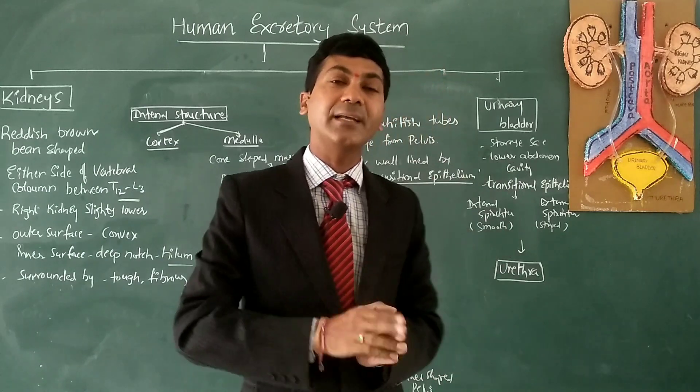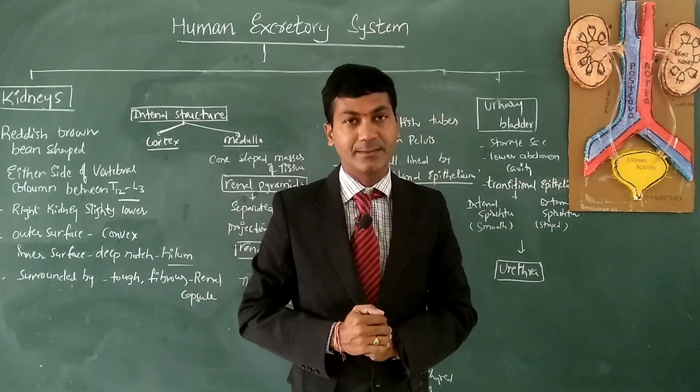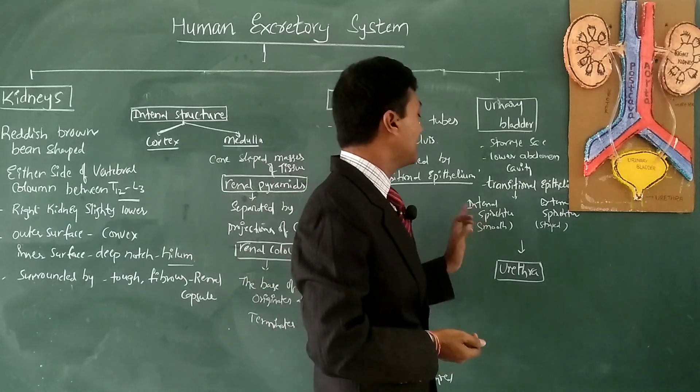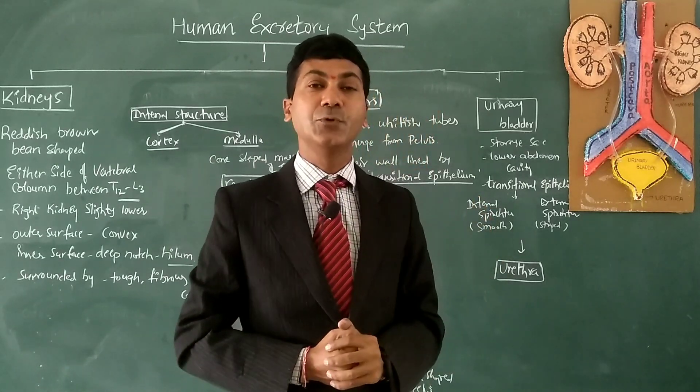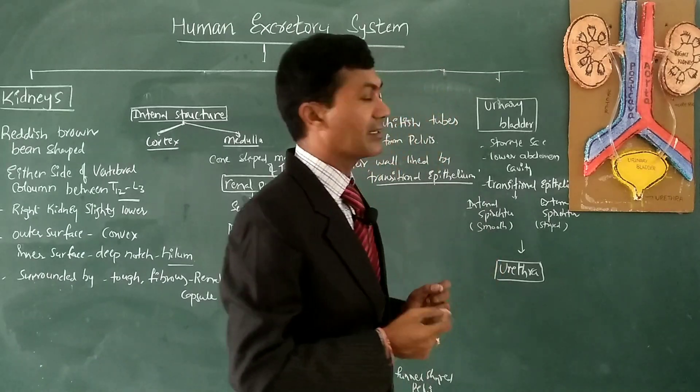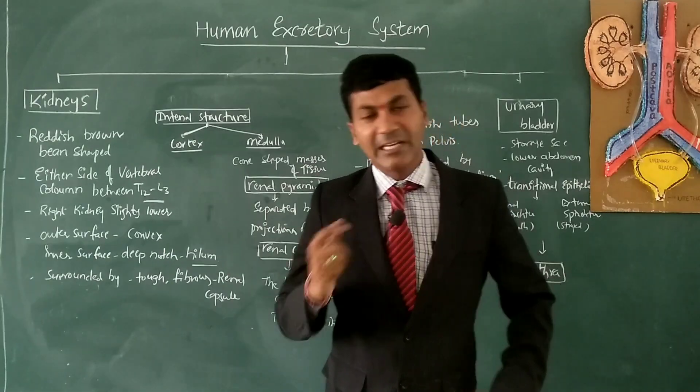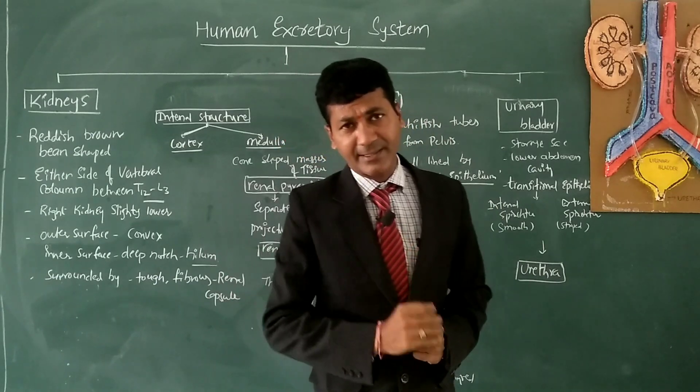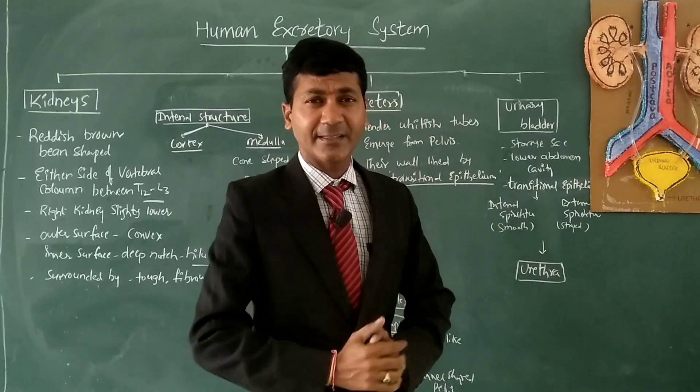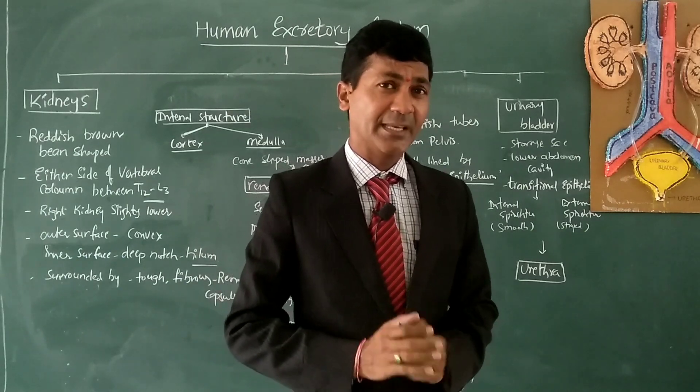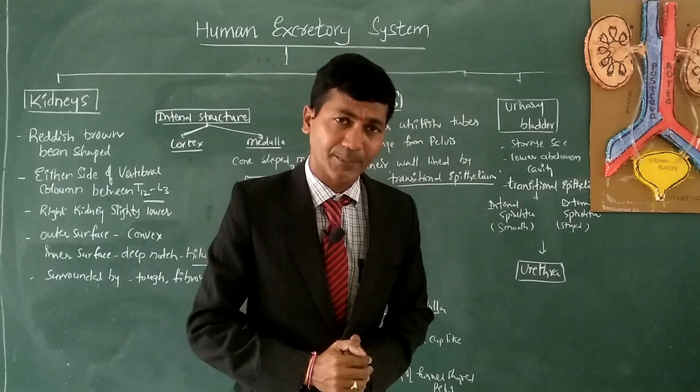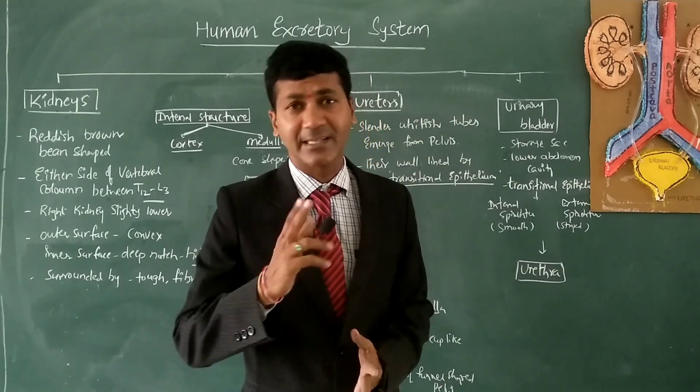The urethra is guarded by two sphincters. The internal sphincter is made up of smooth muscles, which is not under voluntary control, and the external sphincter is made up of striated muscles. In females, the urethra opens near the vaginal orifice. In males, the urethra travels along the penis and opens outside at the glans penis.